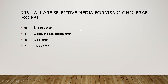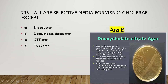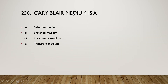Next question: all are selective media for Vibrio cholerae except bile salt agar, deoxycholate citrate agar, GTTA agar, or TCBS agar? The right answer is option B — deoxycholate citrate agar is not used as a selective medium for Vibrio cholerae. It is mainly suitable for isolation of dysentery bacilli, food poisoning Salmonella, Salmonella paratyphi, or Shigella, and it is heat-sensitive and should not be autoclaved or re-melted.